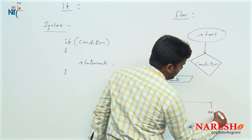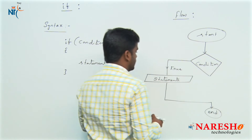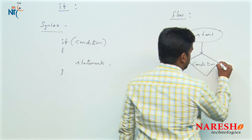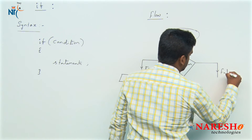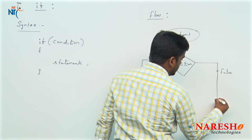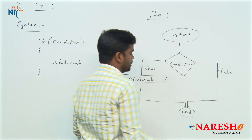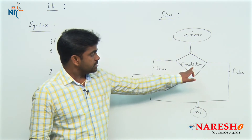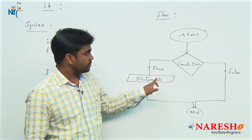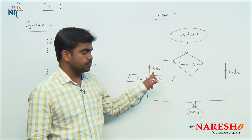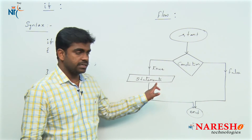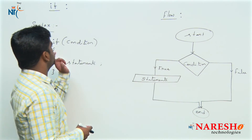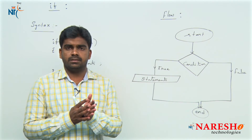After execution of the block, it will end. If the condition is false, directly without executing any statements, control comes to end. So a block of instructions executes only when the condition is true. If the condition is false, it skips the statements — this is how the if block executes.